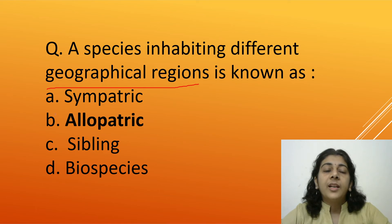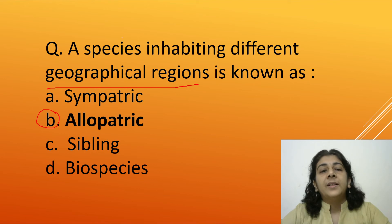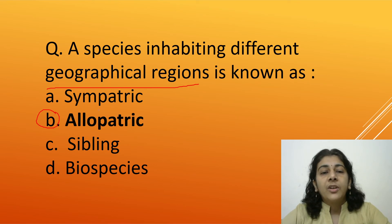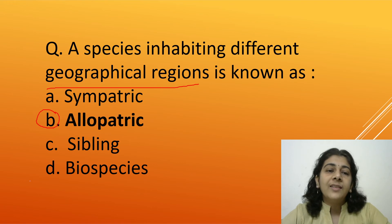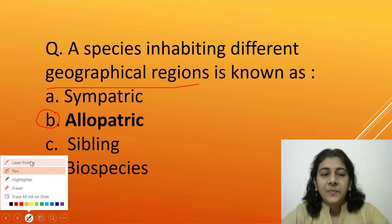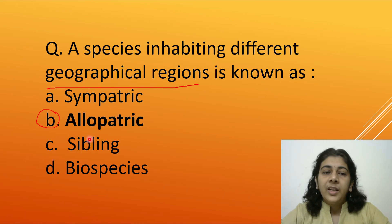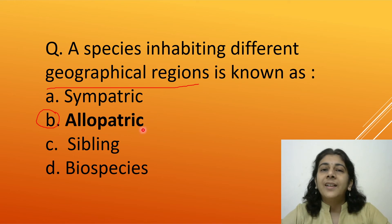The answer to this question is option B. The species inhabiting different geographical regions is known as Allopatric species. Option B is the correct answer for this question.